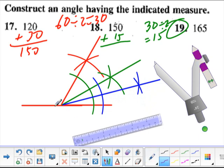And so now what I know is that this angle is 120 plus 30 plus 15, which is 165. Kind of cool, huh?